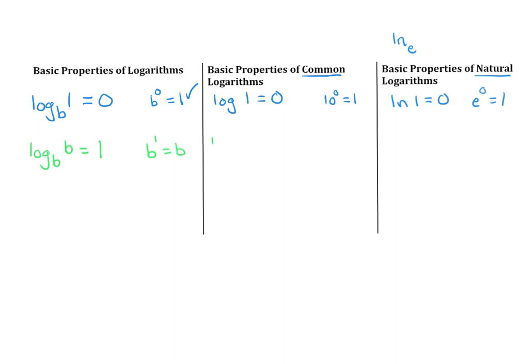That makes perfect sense. So if you have log of 10, that equals 1 because that's a common log, base 10 to the power of 1 is 10. And if you have the natural log of E, that equals 1 because base E to the power of 1 is E.